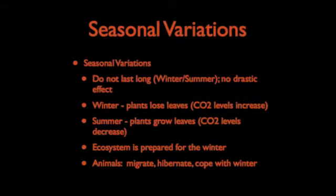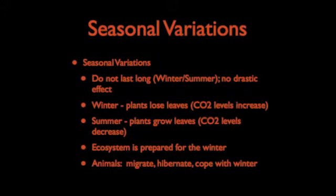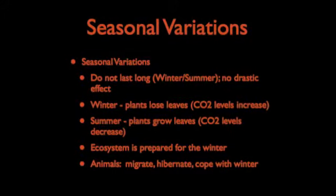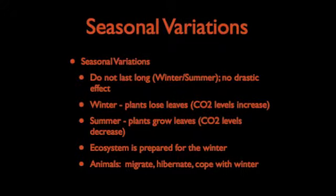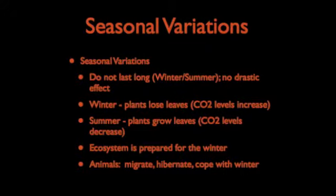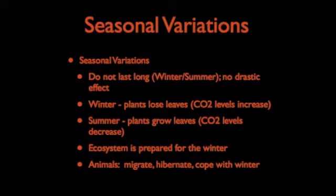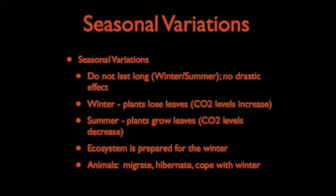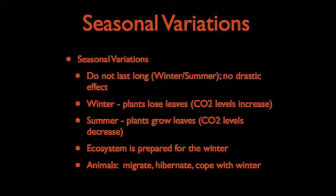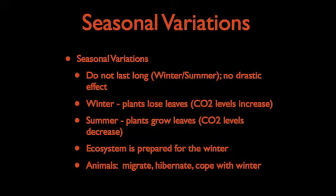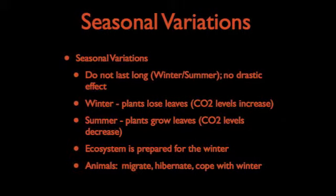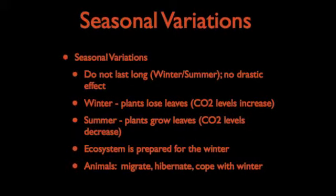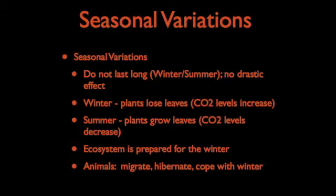Seasonal variations do not last long — for example, winter and summer — and there is no drastic effect on the ecosystem. In the winter, plants lose their leaves and CO2 levels are going to increase. In the summer, plants grow leaves and CO2 levels are going to decrease. The ecosystem is prepared for the winter; for example, animals will either migrate or hibernate to cope with it.